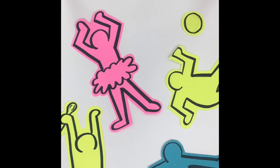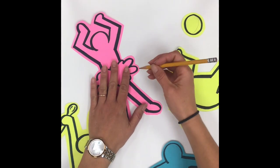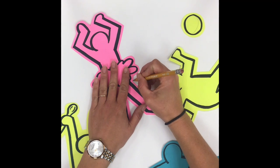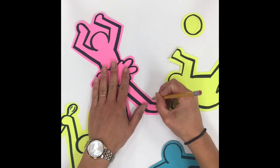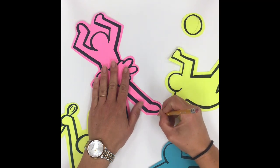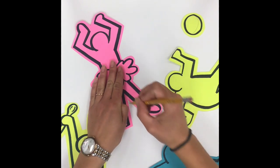After you have your layout the way you like it, you're going to take a pencil and very carefully and lightly trace around each figure so that you know where it goes.